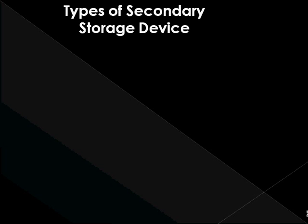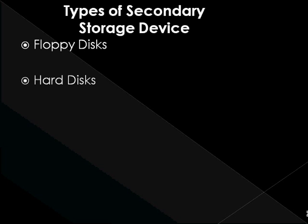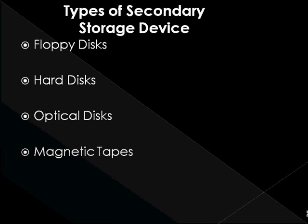There exist different types of secondary storage devices, each suitable for different purposes. They mainly differ in the technology used to store data, the capacity they can hold, the size of the storage device, portability, and access time. Currently the most common forms are floppy disks, hard disks, optical disks, magnetic tapes, and solid-state devices. Understanding the characteristics of each would help you choose the most appropriate storage device for your data.